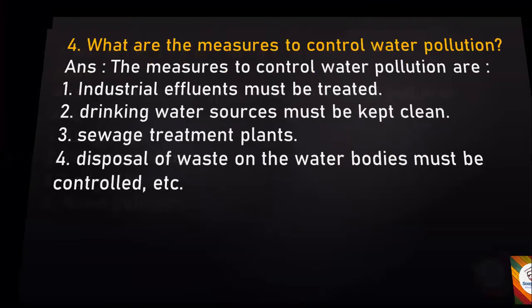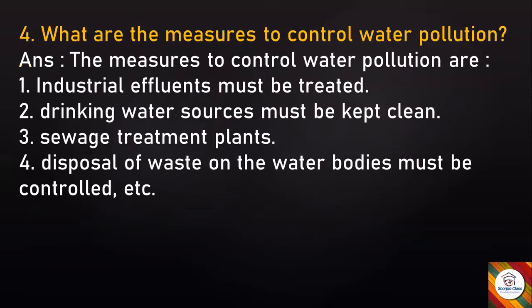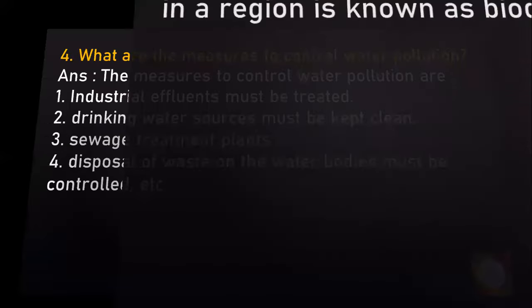Next: What are the measures to control water pollution? Answer: The measures to control water pollution are: Industrial effluents must be treated. Drinking water sources must be kept clean. Sewage treatment plants must be established. Disposal of waste on the water bodies must be controlled.